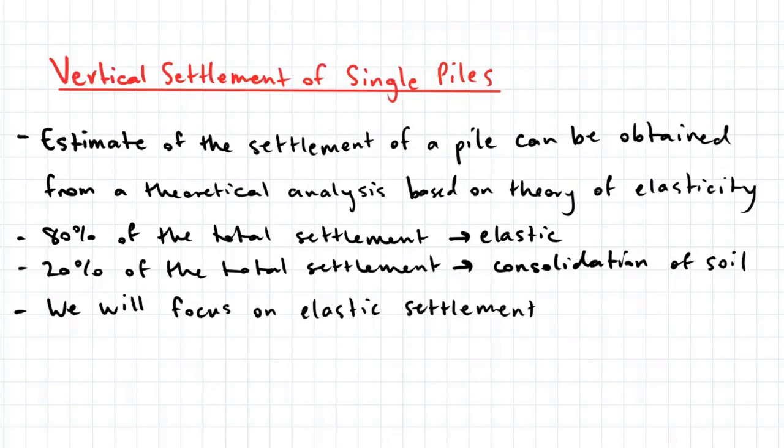In general, 80% of the total displacement of a pile is considered to be elastic, and the other 20% will be due to consolidation of the soil. In this topic, we'll focus on elastic settlement.